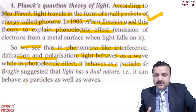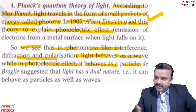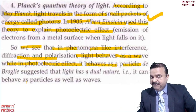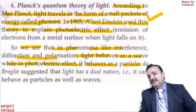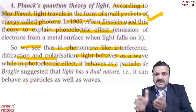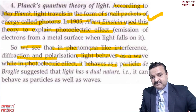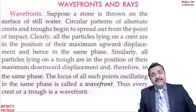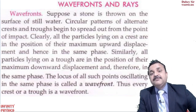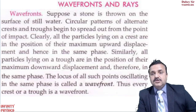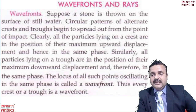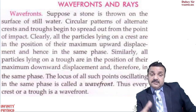So the chronological order is: Newton's Corpuscular Theory, then Huygens' Wave Theory, then Maxwell's Electromagnetic Theory, then Planck's Quantum Theory, and then de Broglie who stated light has dual nature — both wave nature and particle nature.